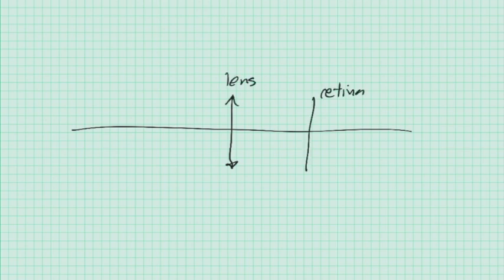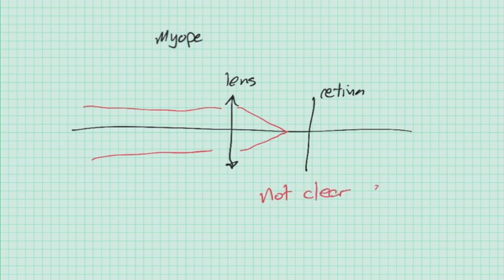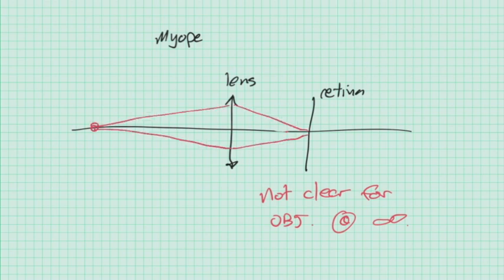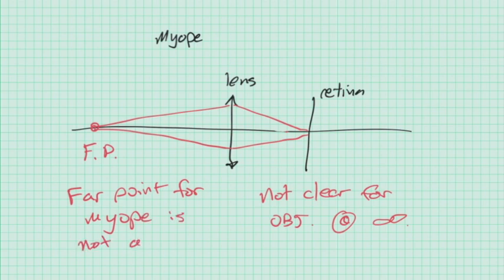If we have an eye that's too long to form a clear image, that eye is myopic. The image forms in front of the retina if the object is at infinity. Instead, that eye can clearly see objects at its far point. For the myope, the far point is not at optical infinity. It's at some location in front of the eye.